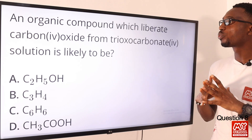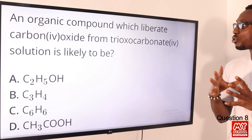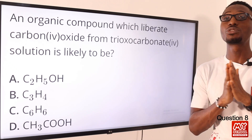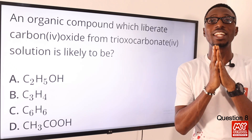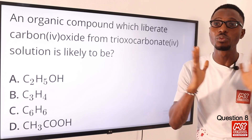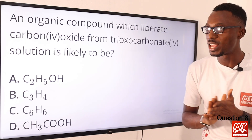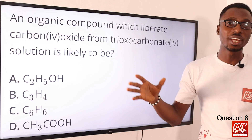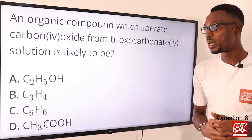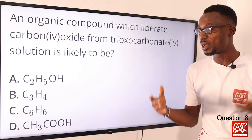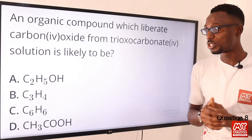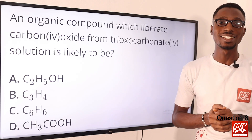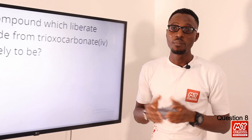Question eight: an organic compound which liberates carbon dioxide from trioxocarbonate solution is likely to be what? That is carboxylic acid. One wonderful property of carboxylic acid — a typical example is ethanoic acid with chemical formula CH3COOH. The correct option is option D for ethanoic acid.